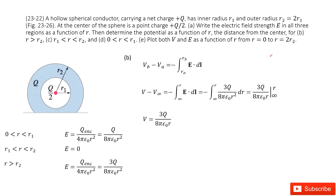The second part is to determine the potential in these three regions. We write the electric fields as before, and use the formula from our textbook. This formula says: if we choose the reference point as A, then VB, the potential difference of B with respect to A, is just negative the integral of E dot DL. We select infinity as the reference location where the potential is zero. Since E points radially outward and DL also points radially outward, E dot DL equals the magnitude of E times DR.